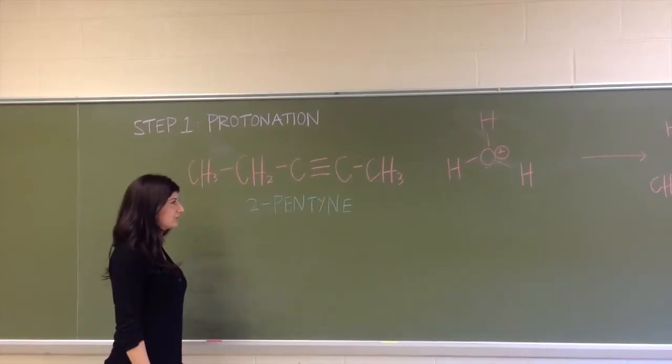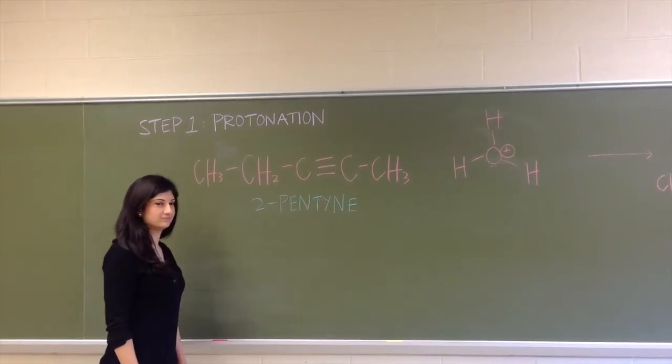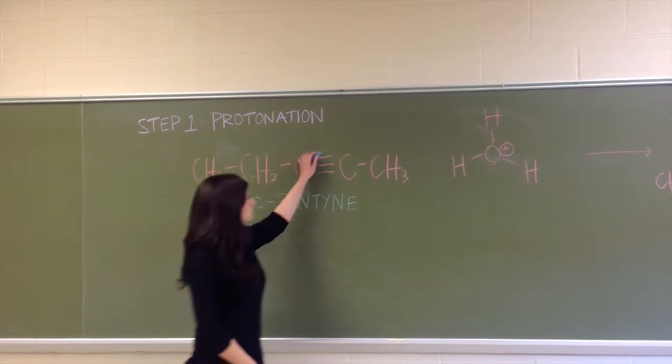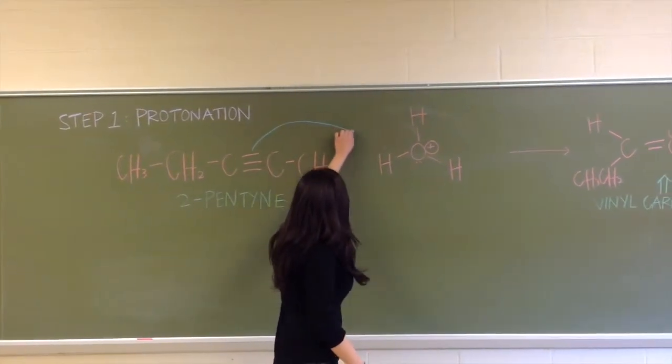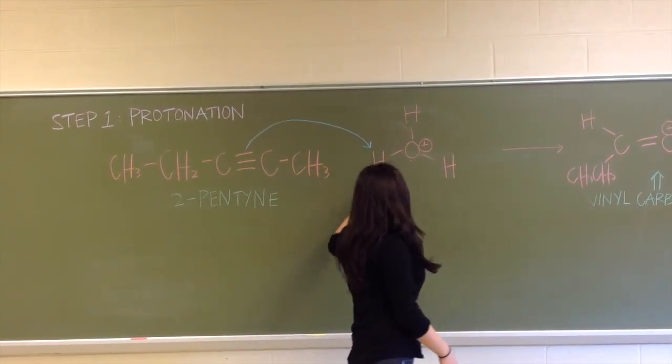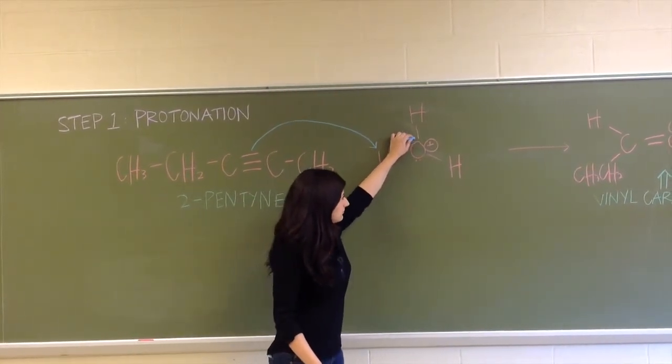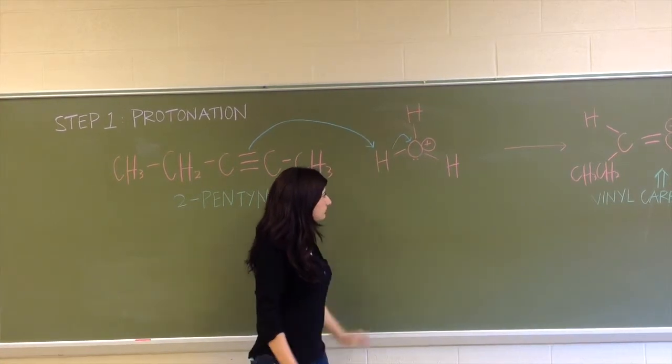First step is protonation. One of the pi bonds in 2-pentine is going to attack a hydrogen. And simultaneously, the sigma-OH bond is going to break and the electron pair is going to be taken by the oxygen.